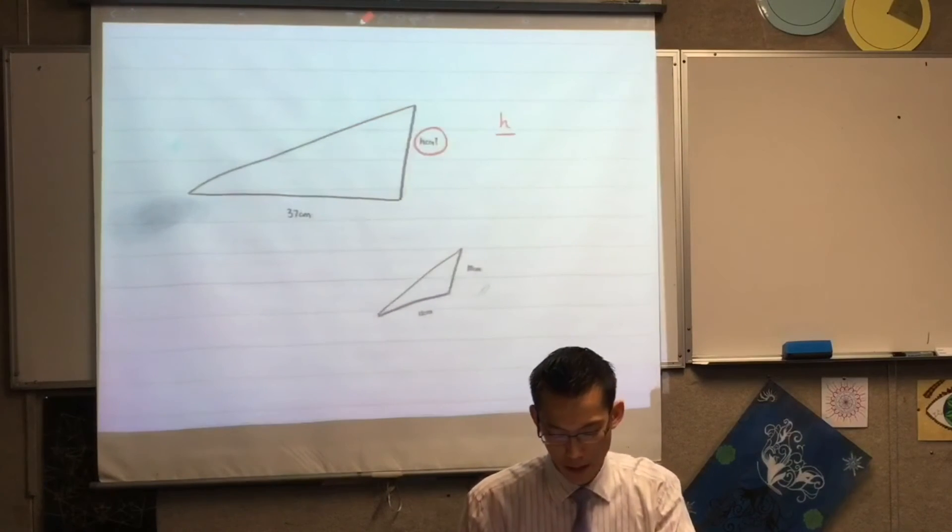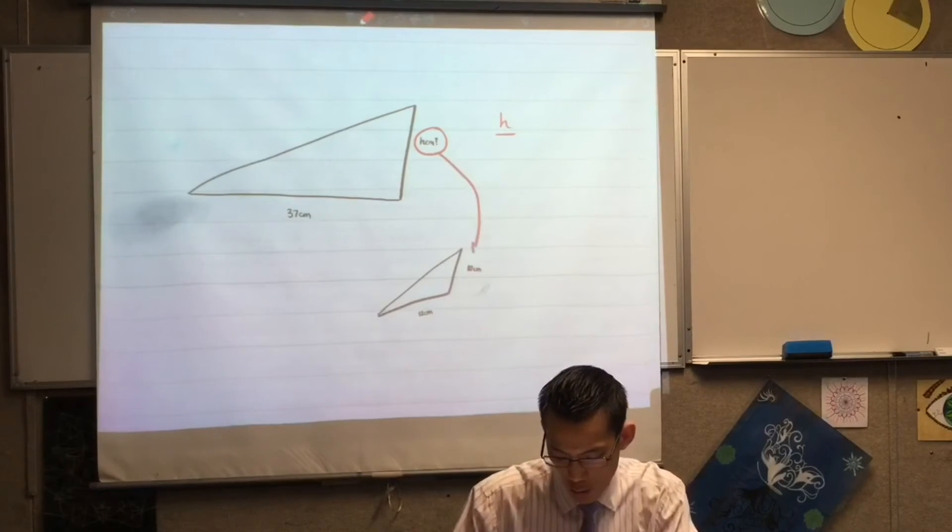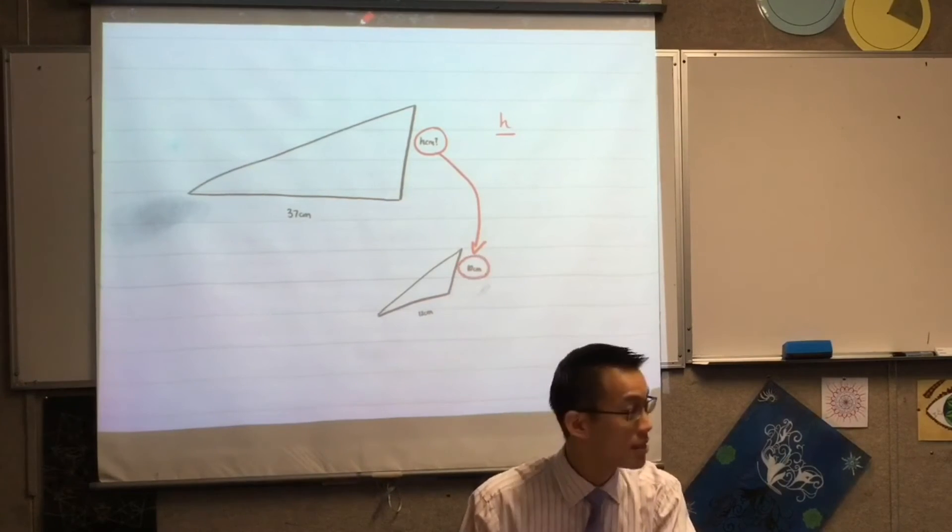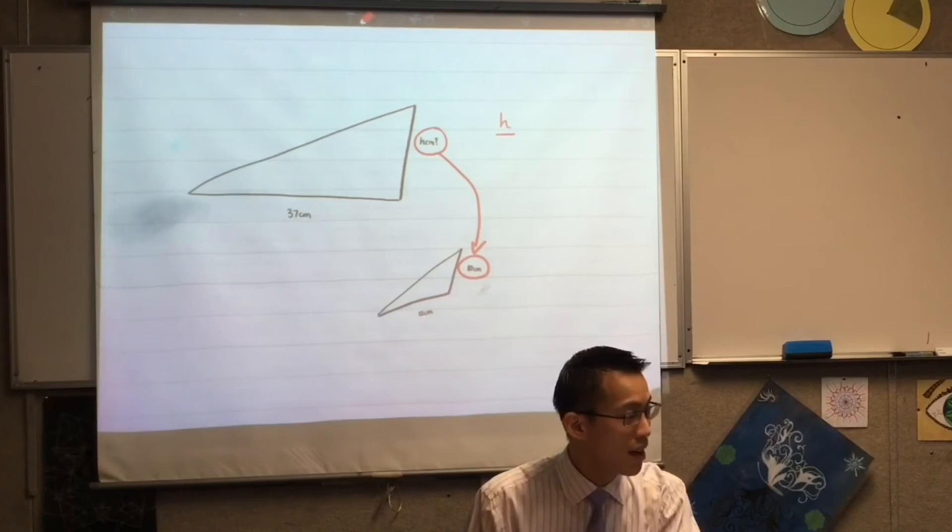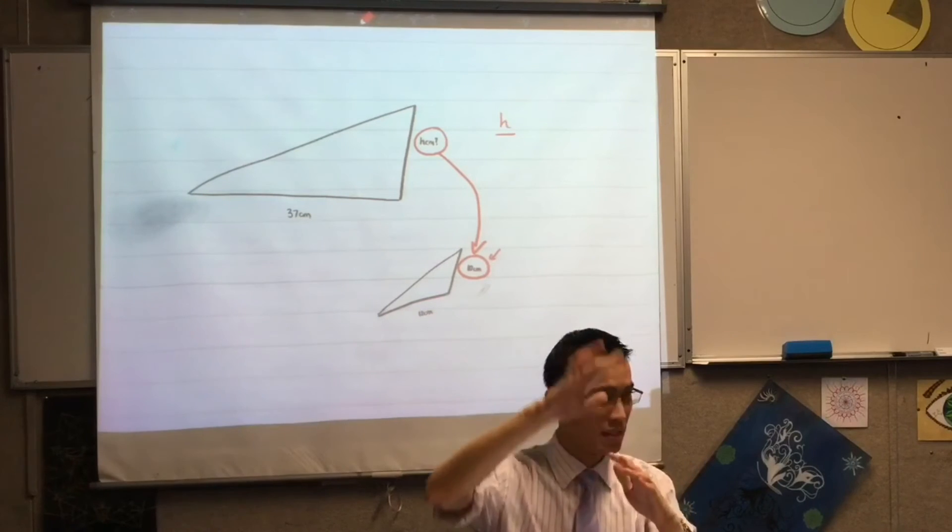Then what happens next? I... okay, the side that the length that corresponds to that H, this is 10, right? Now I could have started with this one and then done 10 over H, but do you see, because what I want is H, I need H on the top eventually.